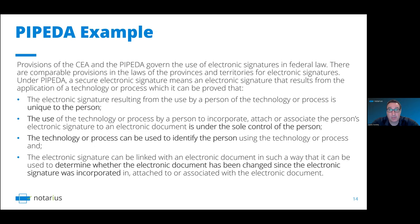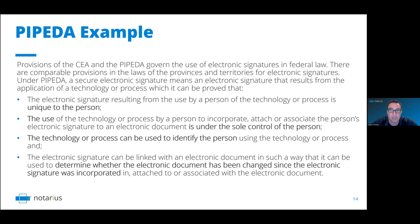At the federal level, there are provisions of the Canadian Evidence Act, and also the Personal Information Protection and Electronic Documents Act (PIPEDA), which applies to federal institutions. Their definition of electronic signatures requires: (1) the process or technology used is unique to the person; (2) it's under the sole control of the person; (3) the technology can be used to identify the person; and (4) it can determine whether the electronic document has been changed since the electronic signature was applied. We're starting to see a trend — lots of similarities with the UN framework.